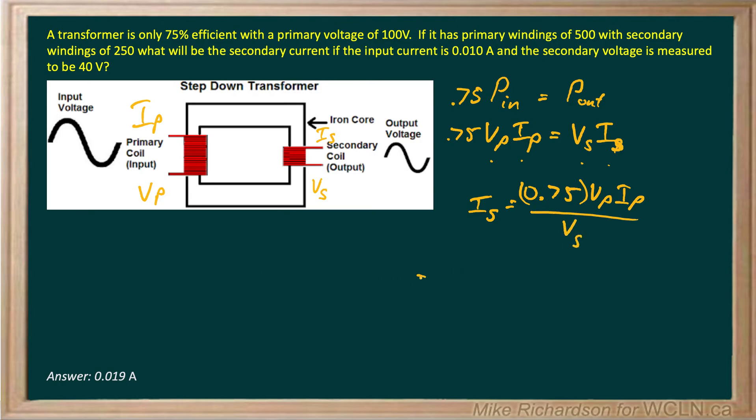Which is going to be equal to 0.75 times my primary voltage, which is given as 100, times my primary current. And that's, by the way, the same thing as your input current.